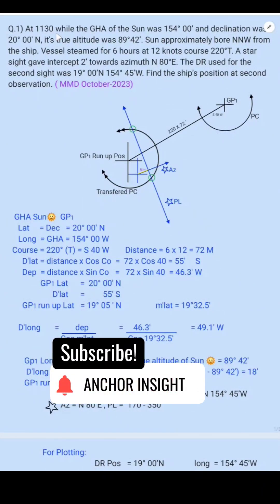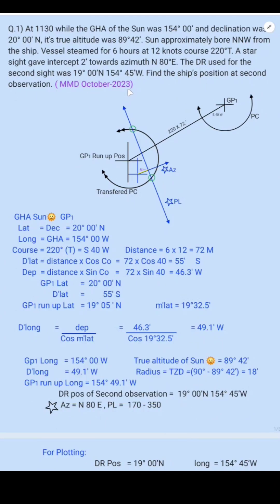Hello everyone, today I will be talking about a question paper from SQA Phase One Navigation, which came in October 2023. The question is: at 11:30, while the GHA of the sun was 154°00' and the declination was 20°00' North, its true altitude was 89°42', sun approximately bore NNW from the ship. The vessel steamed for six hours at 12 knots, course 220°. Through a star sight, intercept two miles towards azimuth 000°. The DR used for the second sight was 19°00'N, 154°45'W. Find the ship's position at the second observation.